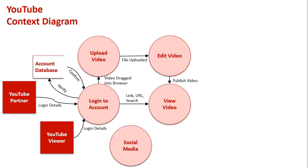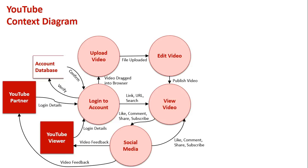Once that video is online, the social media aspect also comes into play. Social media works both ways for both types of YouTube users. First, they can like, comment, subscribe and share all the videos they're accessing. But they're also receiving feedback from their own uploaded videos - people liking their videos and comments written on them. That feedback comes back to both types of users.